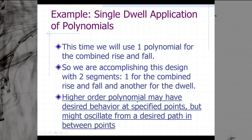This time, however, we're going to use one polynomial for the combined rise and fall. So in effect, we are accomplishing this design with two segments: one for the combined rise and fall, and another for the dwell. We only need a polynomial for the rise and fall segments. We do not need a polynomial for the dwell, because for the dwell, no equation is necessary. We simply maintain the values at the end of the previous segment.